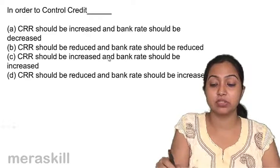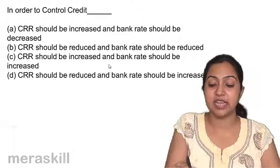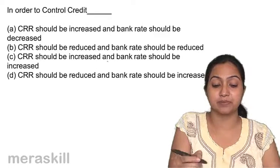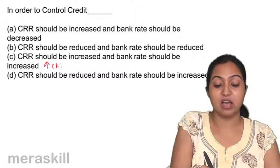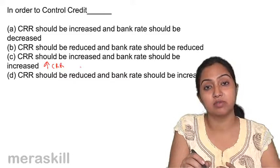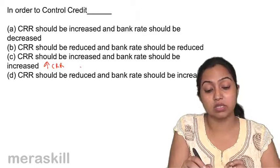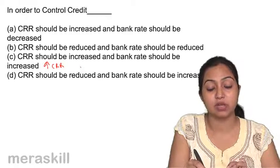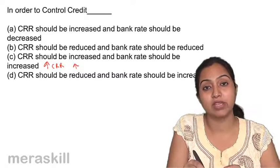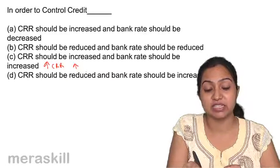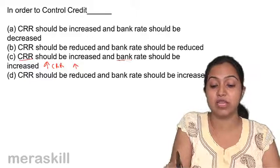When CRR is increased, the amount of credit available for lending is reduced. When bank rate is also increased, borrowing becomes expensive and that is how you can control credit. So both CRR and bank rate should be increased.